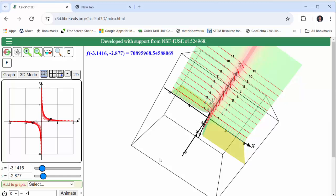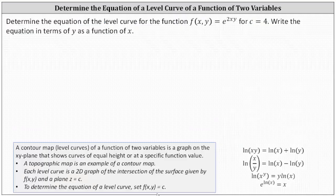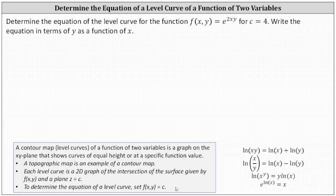And now let's go back and determine the equation. Again, to determine the equation, we set f(x,y) equal to c, which gives us the equation e^(2xy) = 4. And now we need to solve the equation for y.